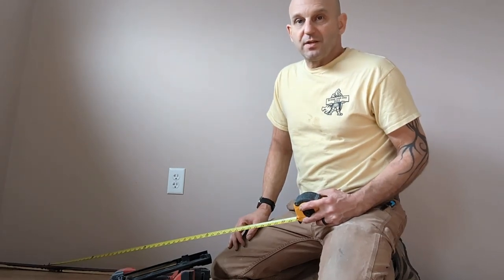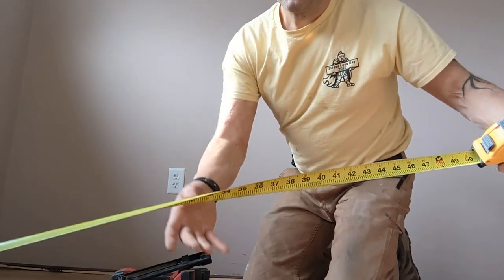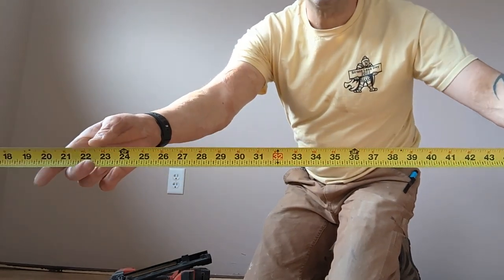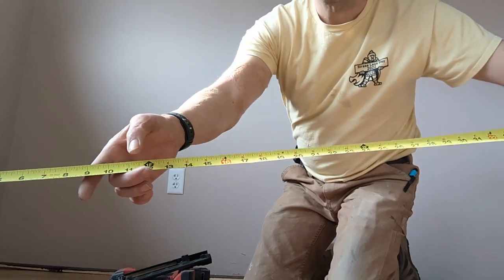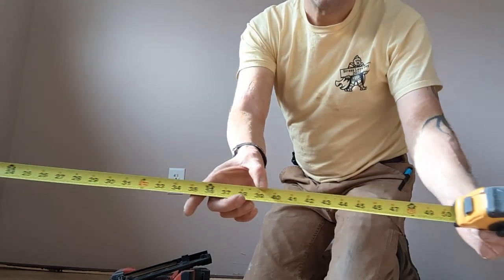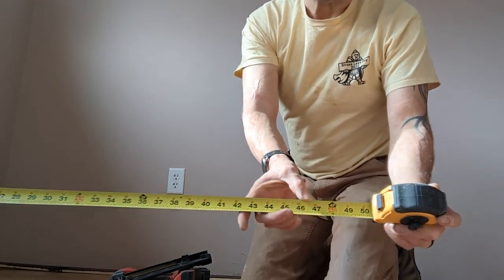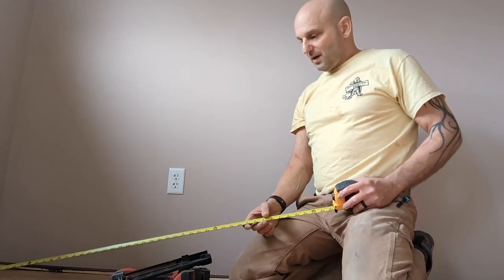Most tape measures that are designed for carpentry or construction will have occasionally numbers that are marked in red. Those red are 16, 32, 48, and onward, all multiples of 16.